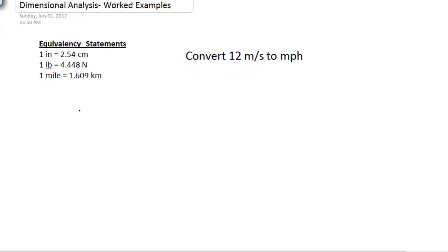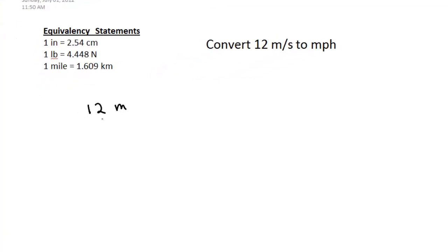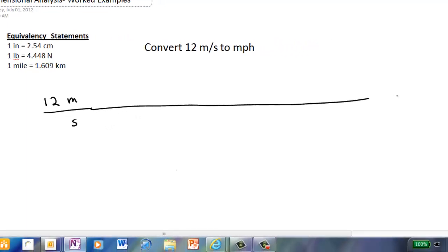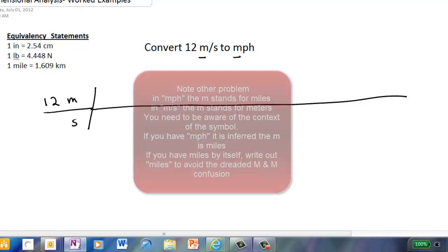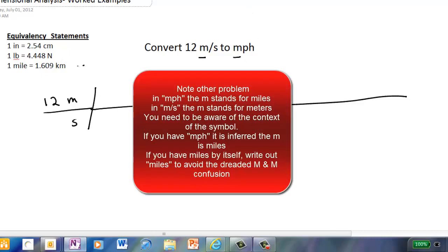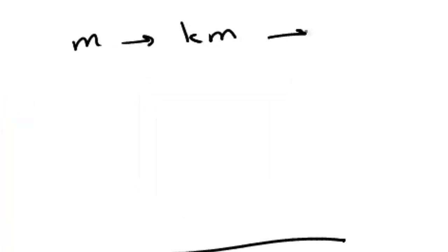To do this, we first write 12 meters over seconds. I would just draw a big long line there, so I've got plenty of room to do my conversions. I can either convert meters first or seconds first, and I'm going to go with the distance unit meters. The trouble is I've got meters and I'm trying to go to miles, and I have no equivalency from meters to miles. So I'm going to have to go from meters to kilometers, and then from kilometers to miles. So I have a game plan.